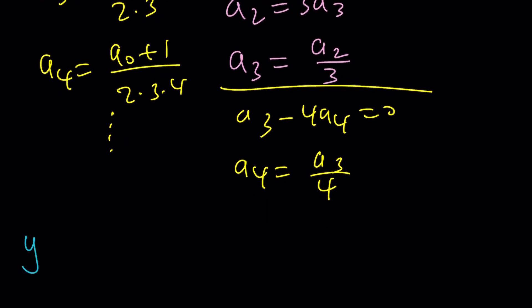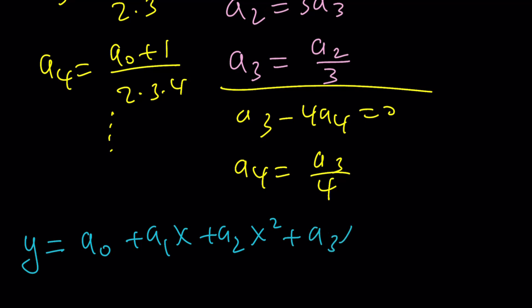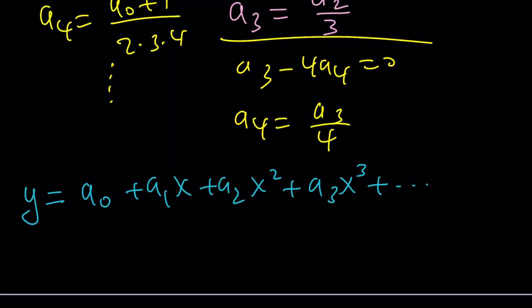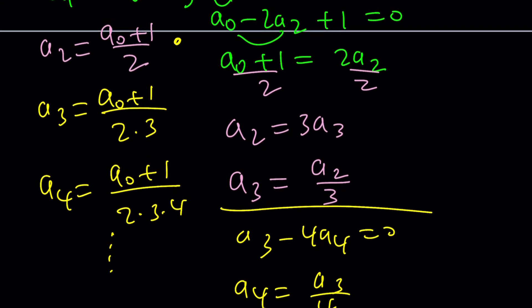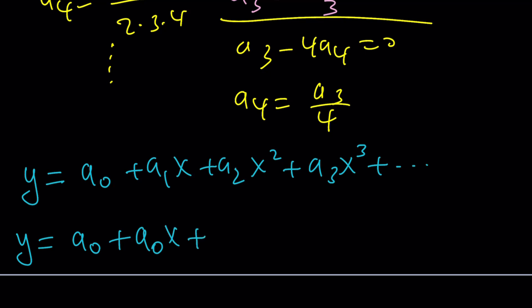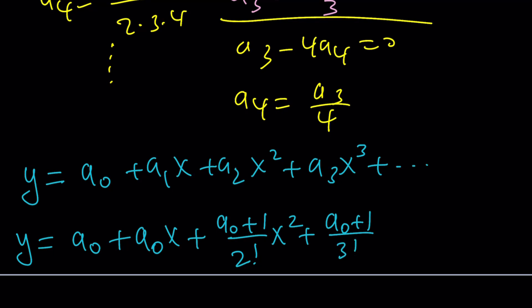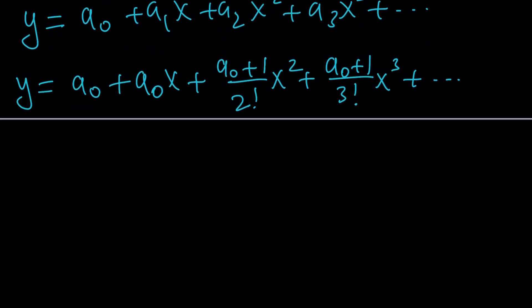Now it's time to plug everything back in. Recall y equals a sub 0 plus a sub 1 x plus a sub 2 x squared plus a sub 3 x cubed and so on. Writing everything in terms of a sub 0: a sub 1 is a sub 0; a sub 2 is (a sub 0 plus 1) divided by 2 factorial, times x squared; a sub 3 is (a sub 0 plus 1) divided by 3 factorial, times x cubed, and so on. Now I'll separate this into two pieces.